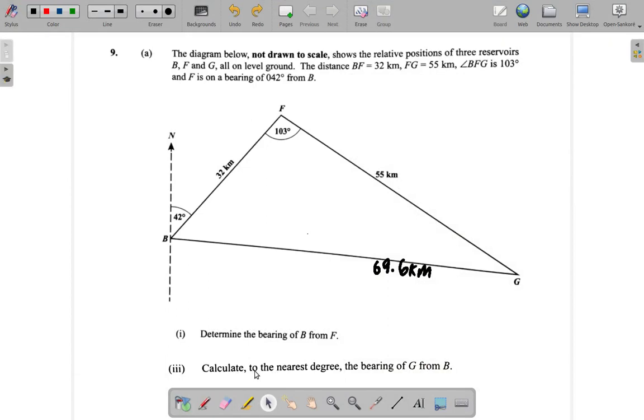Okay, part three says calculate to the nearest degree the bearing of G from B. G from B means B is where the arc and the outline is going to go, so we have an outline here already.